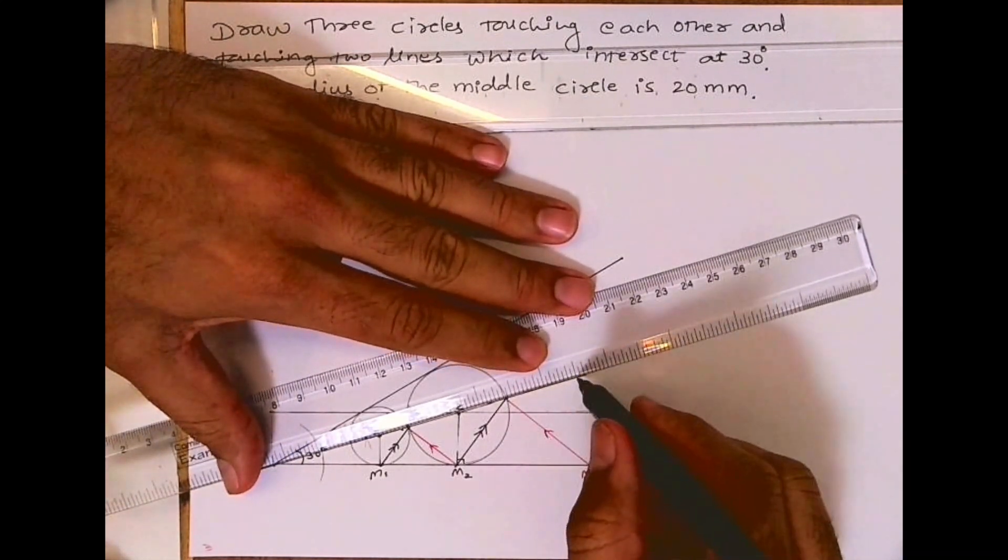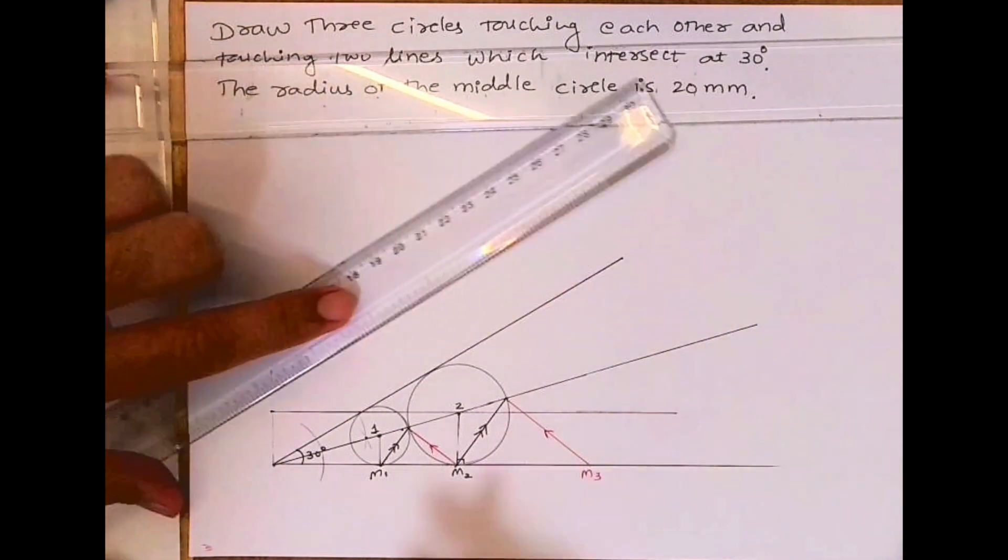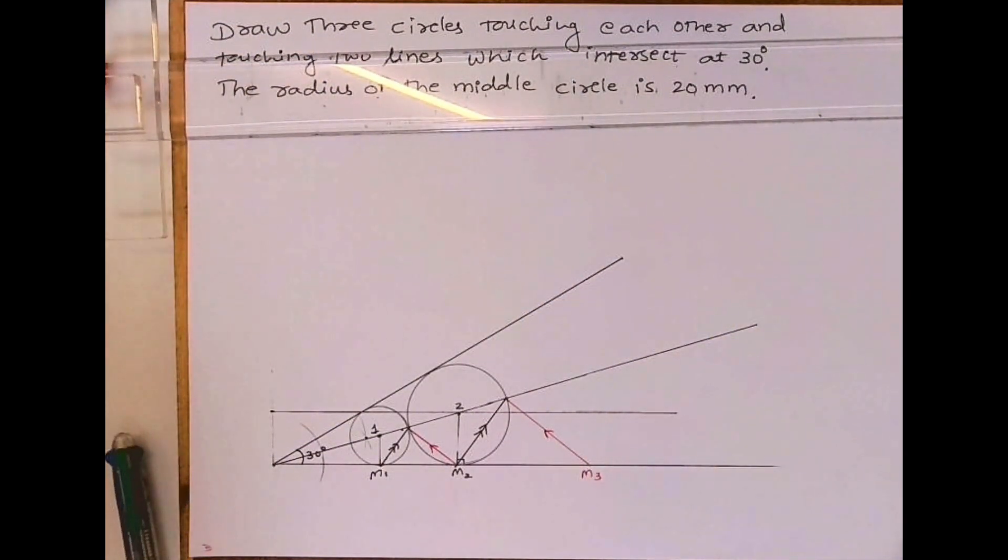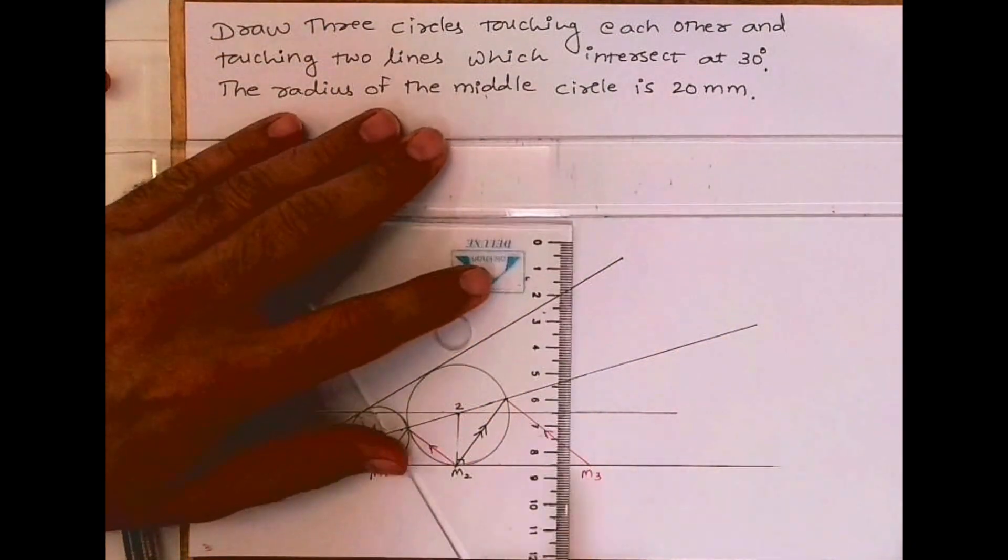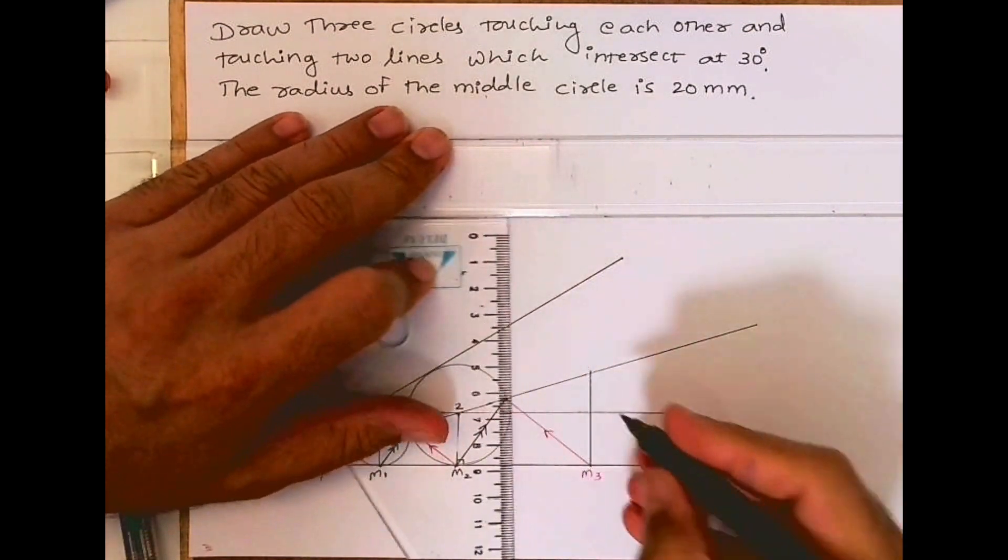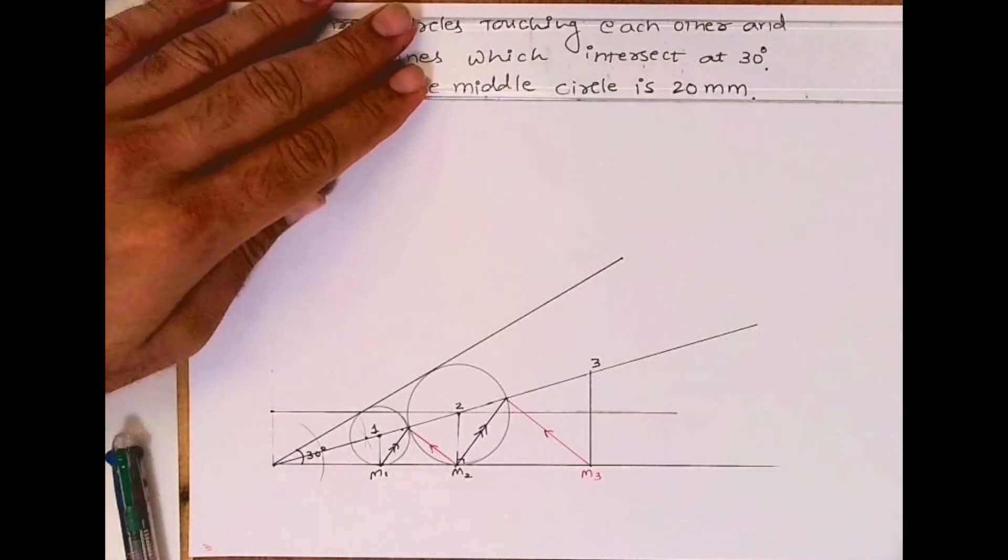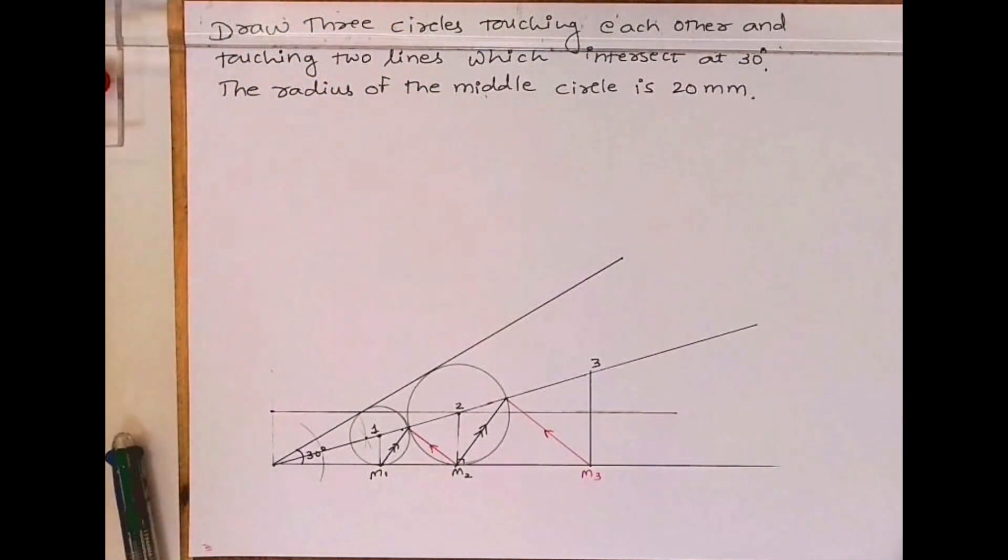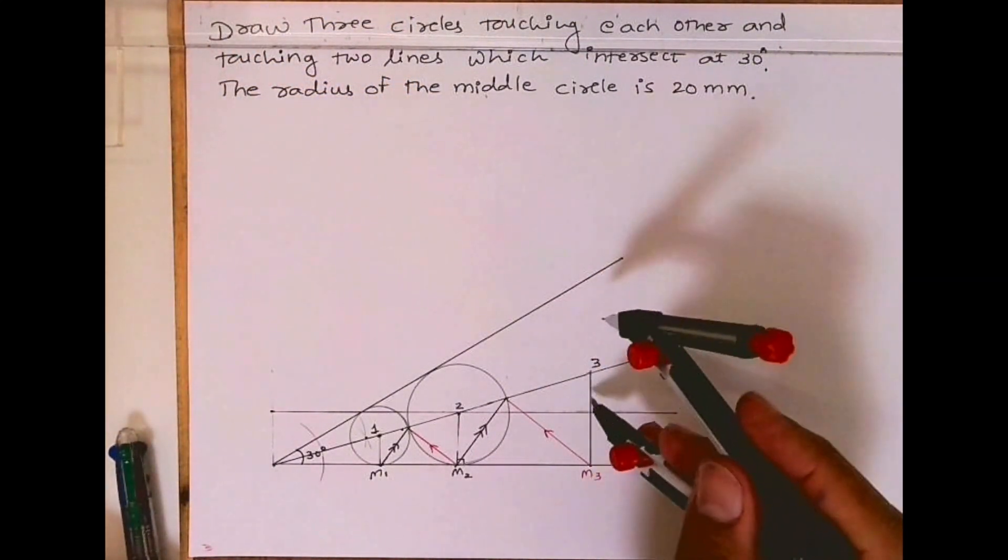Then you draw parallel like this and you'll get point M3. Again, you'll draw a vertical line to get O3. Then you take O3 to M3 and draw the circle, so you'll get the required third circle.